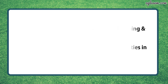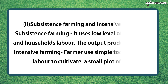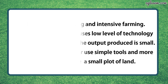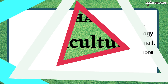Second part is, subsistence farming and intensive farming. Subsistence farming uses a low level of technology and household labor, and the output produced is small. Whereas in intensive farming, a farmer uses simple tools and more labor to cultivate a small plot of land.